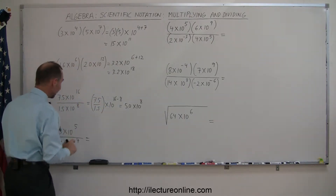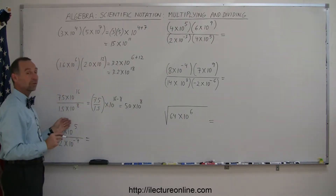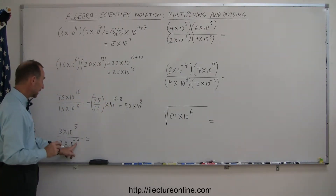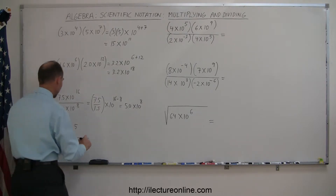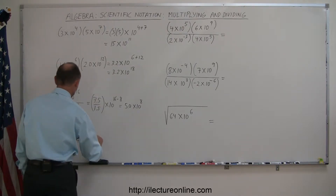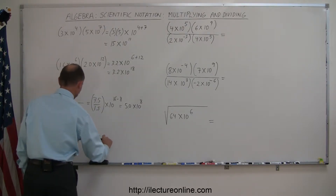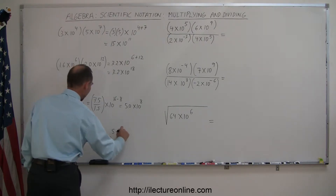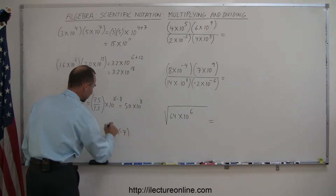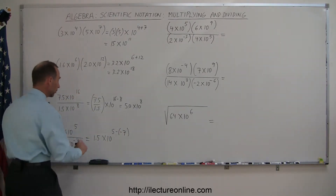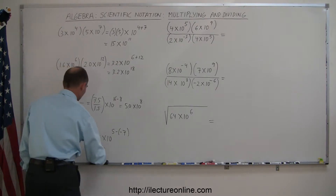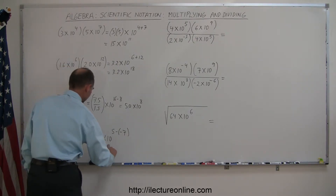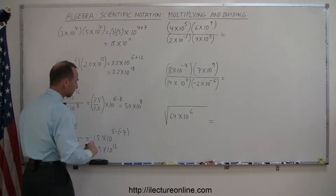The next example uses the same rule, but we have a negative exponent in the denominator. So 3 divided by 2 is 1.5, times 10 to the 5 minus negative 7. Subtracting a negative becomes addition, so this gives us 1.5 times 10 to the 12th power.